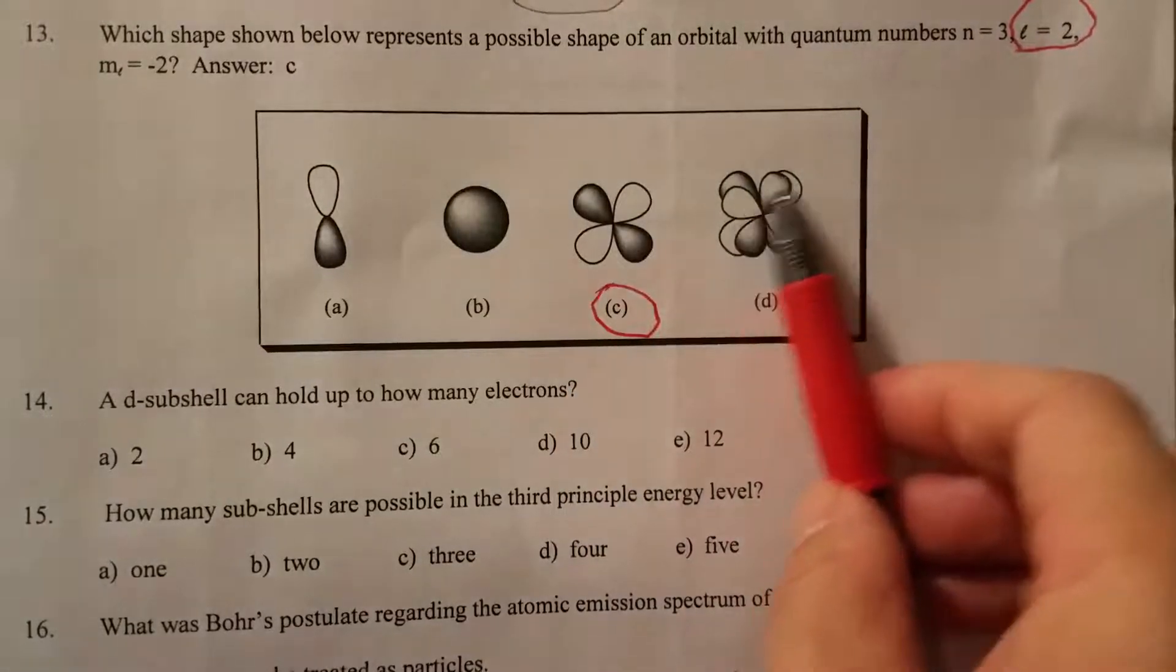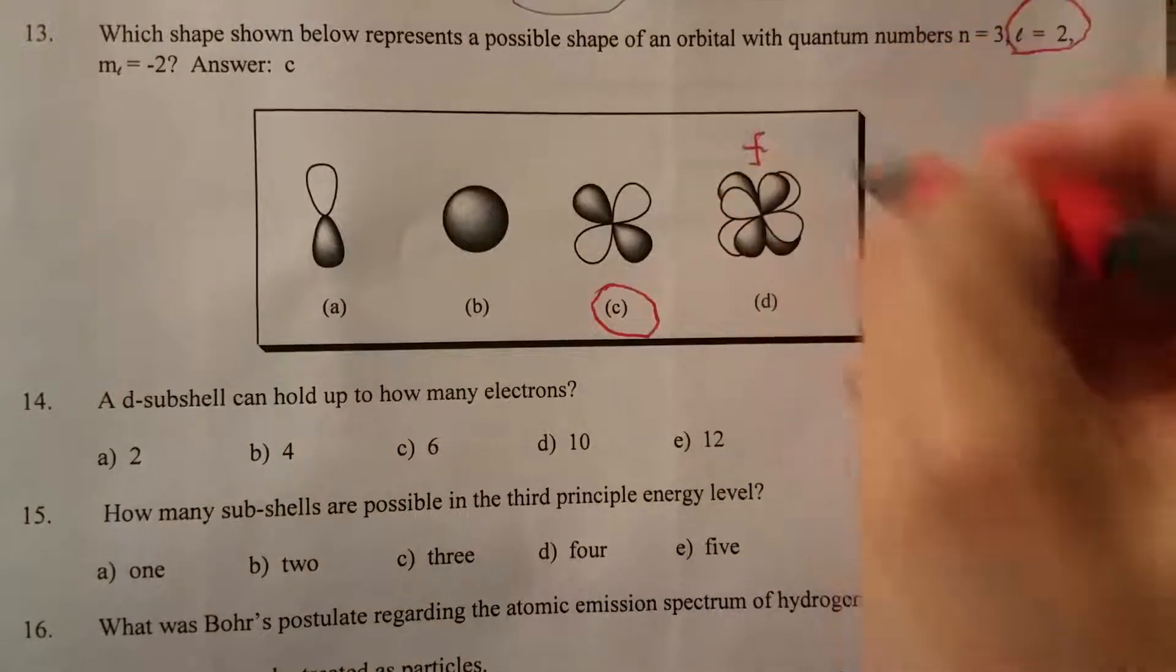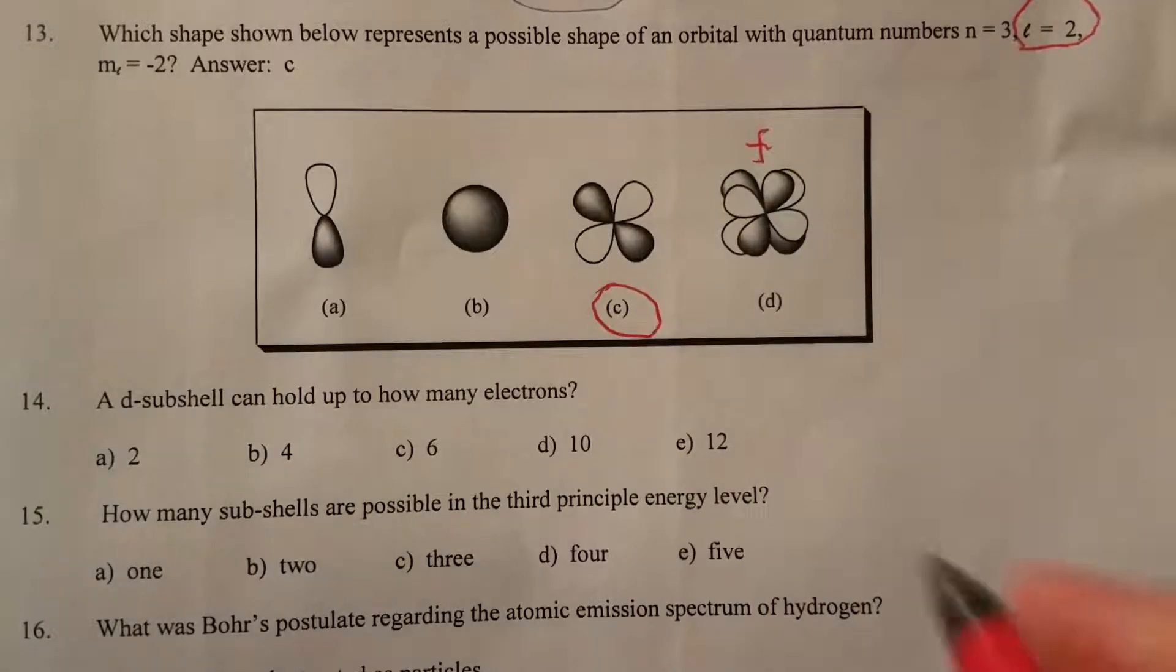So the d has too many. That's actually the f subshell, one of the orbitals in the f subshell.